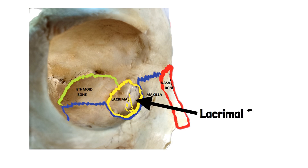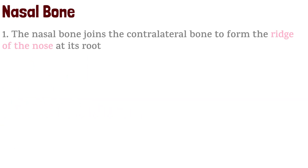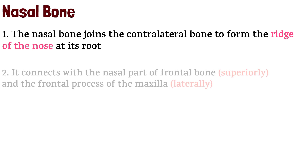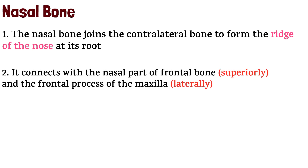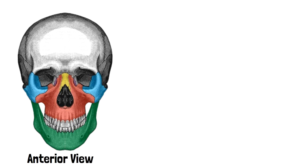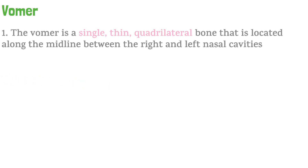Next we have the nasal bone. The nasal bone joins the contralateral bone to form the ridge of the nose at its root. It connects with the nasal part of the frontal bone superiorly and the frontal process of the maxilla laterally. This anterior view of the skull shows the nasal bone shaded in yellow, demonstrating these connections.